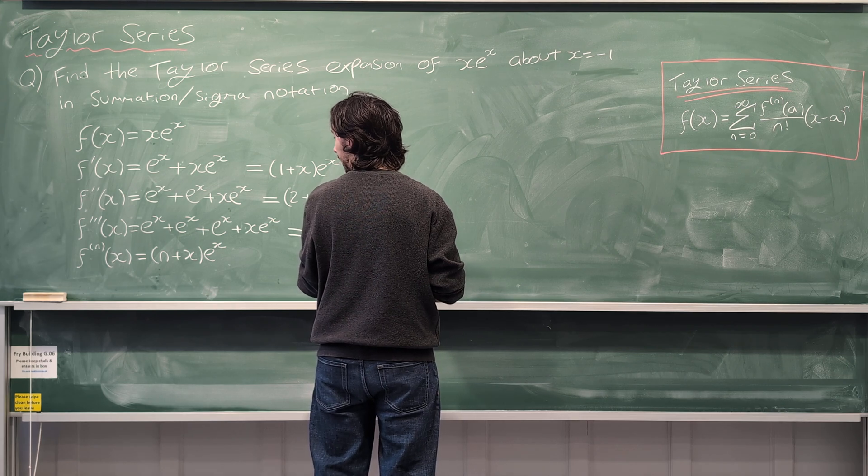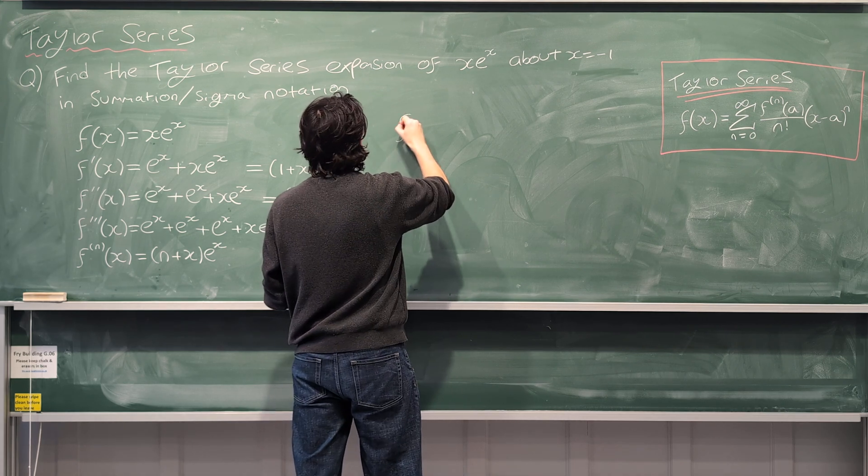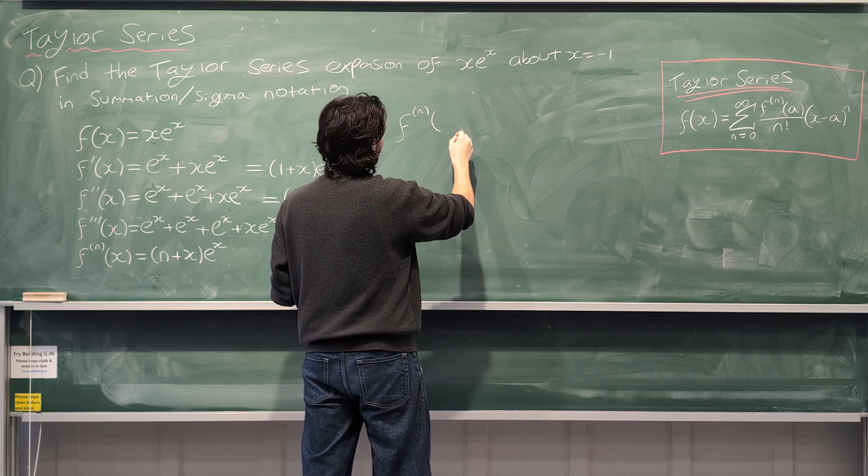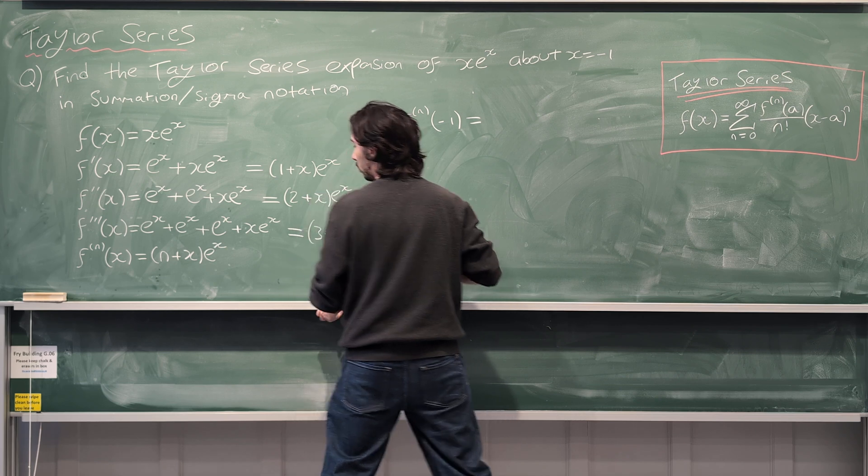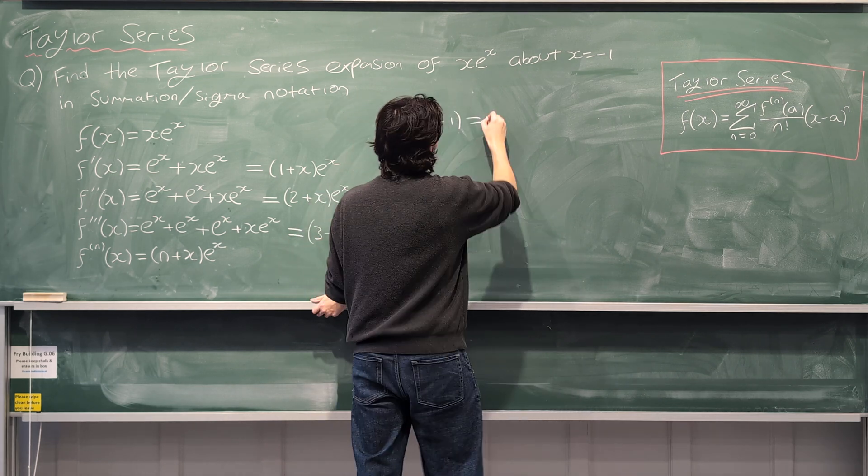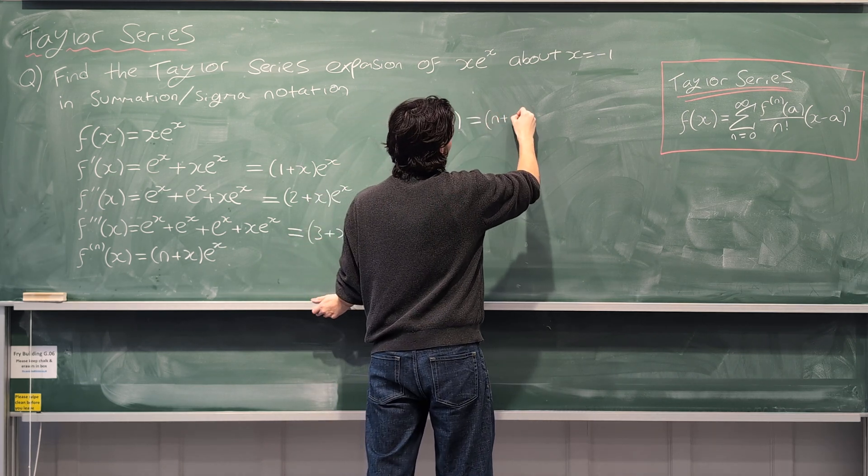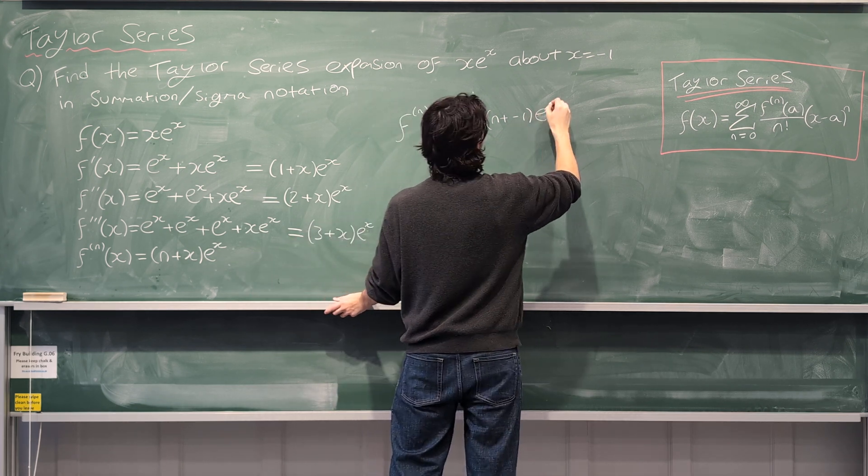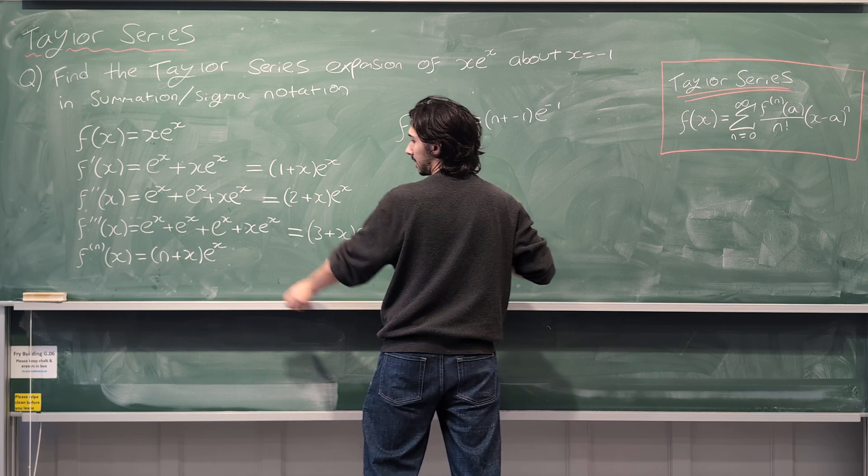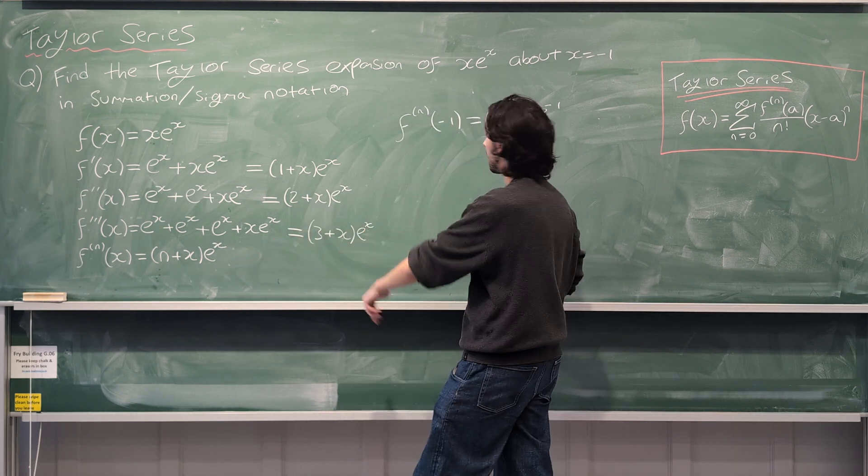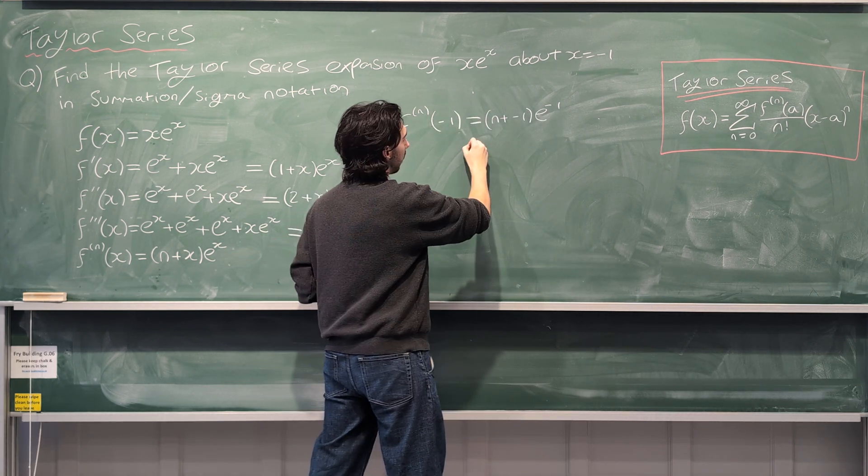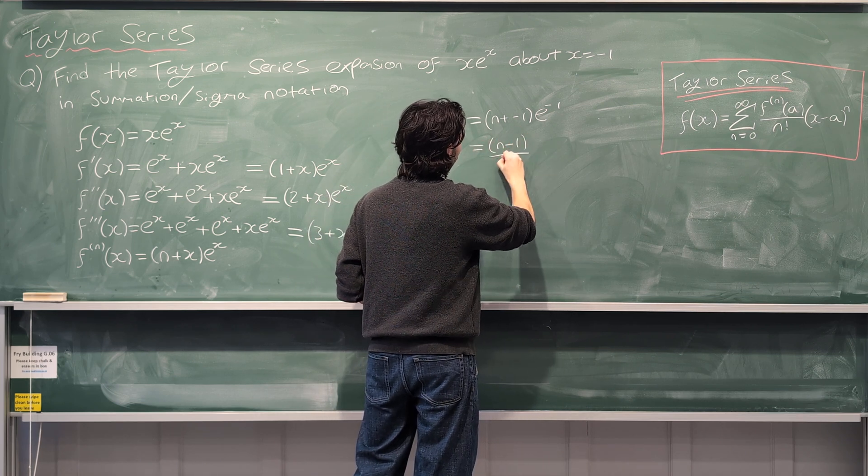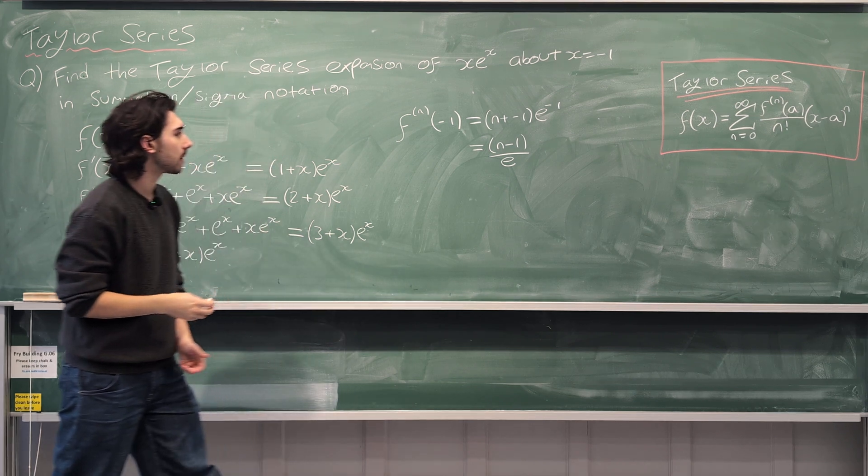So right, we're going to have, yeah, the nth derivative evaluated at minus 1 would just be (n + minus 1) times e^(-1), like that, because it's (n+x)e^x. And then this simplifies to, of course, (n-1)/e. That's probably the best way of writing it. Lovely.